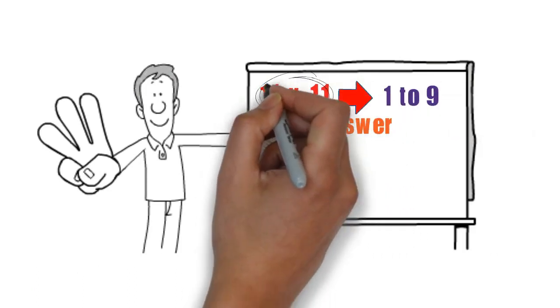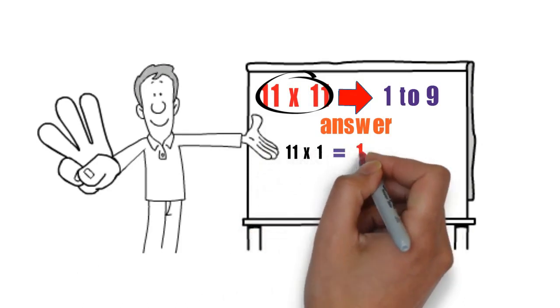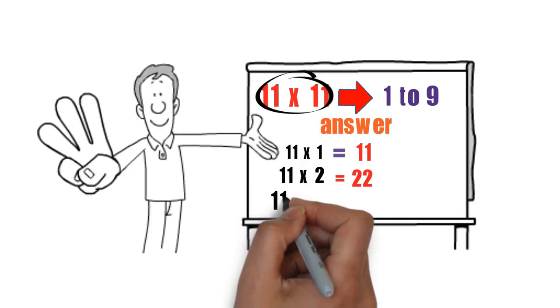For example: 11 times 1 equals 11, 11 times 2 equals 22, 11 times 3 equals 33, and so on.